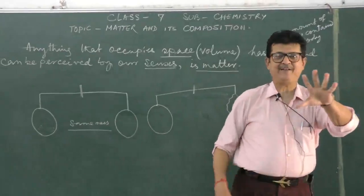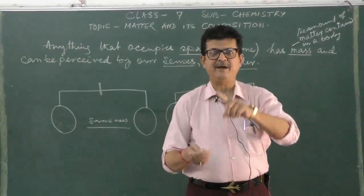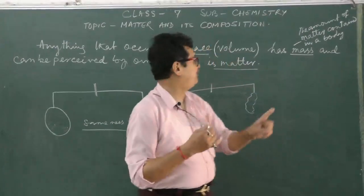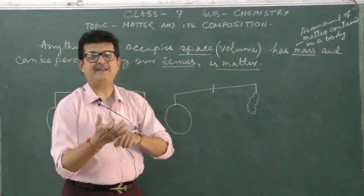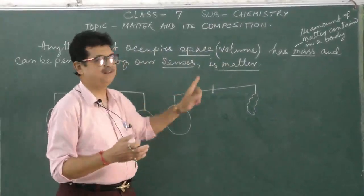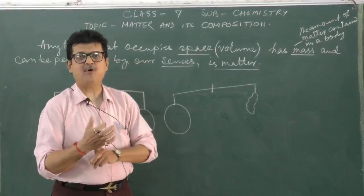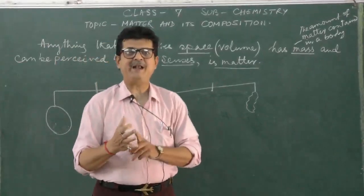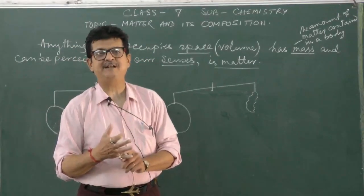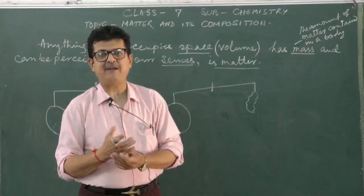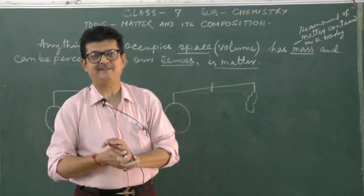There are five characteristic features we see for matter. Number one is it occupies space. Number two is it has mass. Number three, it can be perceived by the physical senses. Number four, it has got inertia. And number five, it offers resistance. This actually explains what a matter is.